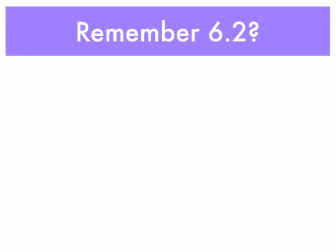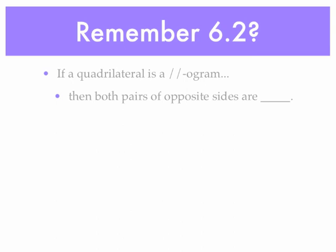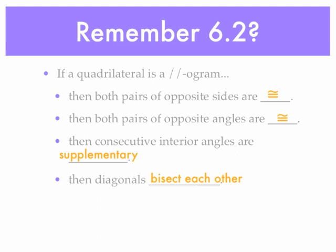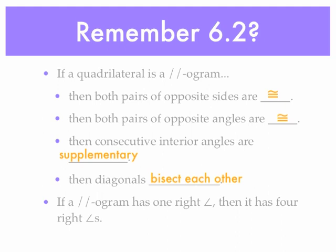If you remember back to Section 6.2, we had a bunch of if-then statements. If a quadrilateral is a parallelogram, then we knew that both pairs of opposite sides were congruent, both pairs of opposite angles were congruent, consecutive interior angles were supplementary, and the diagonals bisect each other. We also had that if we had one right angle, then it had four right angles.